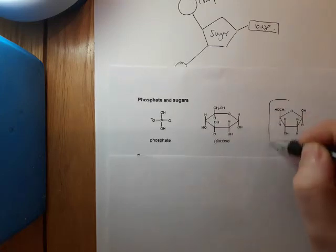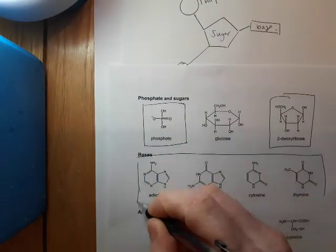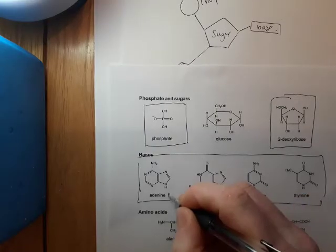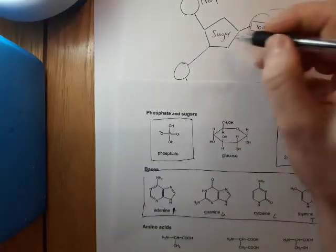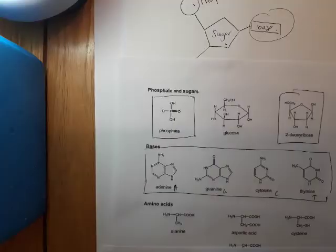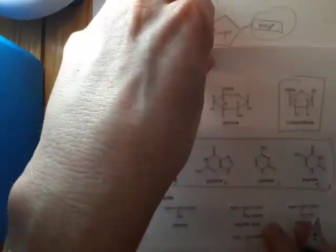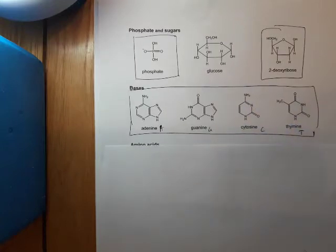So on the data sheet: this is the sugar, this is the phosphate, and then these are the four bases — A, G, C and T — which can go in this place. So you actually have to practise joining these together. You don't want it to be the first time in the exam that you try and draw one. It's all very well knowing phosphate, sugar and base, but you don't want to be doing it for the first time ever in the exam.